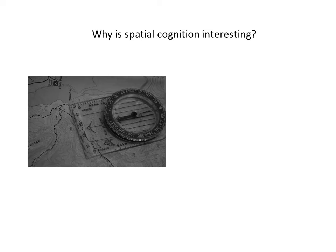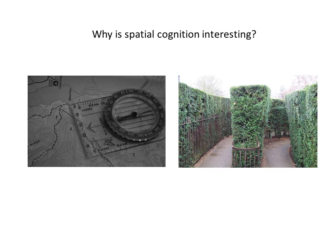Why is spatial cognition interesting? I would argue it's interesting for a variety of reasons. First, navigation itself is interesting. We use a variety of different tools — a map, a compass, a GPS — and different strategies for finding our way on this planet. It can be a challenge. This is a photograph of the Hampton Court maze outside of London, and here is when I was wandering through it. It's very difficult to find your way through this maze. So spatial cognition can be an interesting challenge for us.